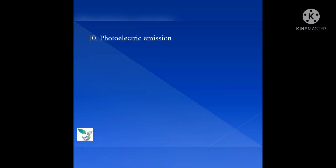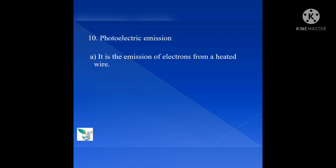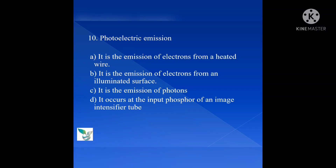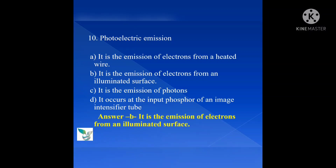Question number 10: What is photoelectric emission? Option A: It is the emission of electrons from a heated wire; Option B: It is the emission of electrons from an illuminated surface; Option C: It is the emission of electrons; Option D: It occurs at the input phosphor of an image intensifier tube. The answer is Option B — it is the emission of electrons from an illuminated surface.